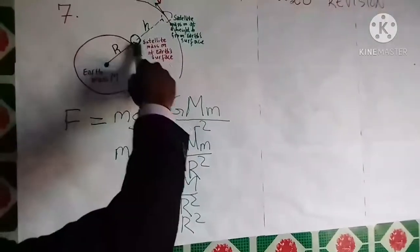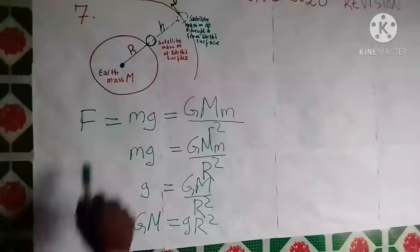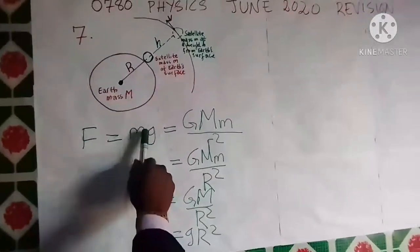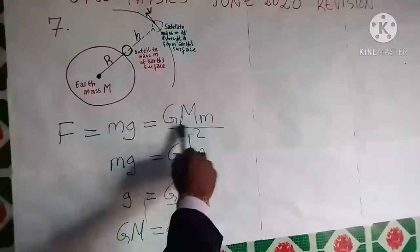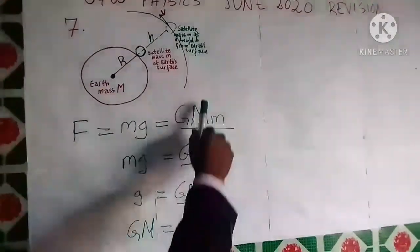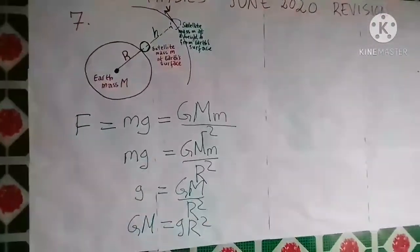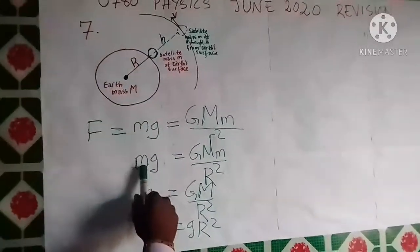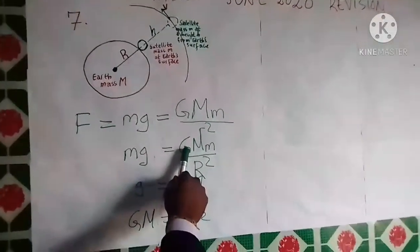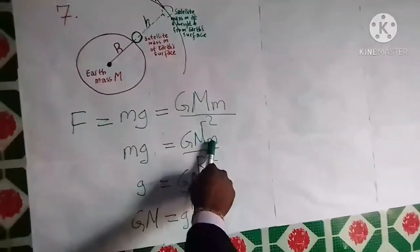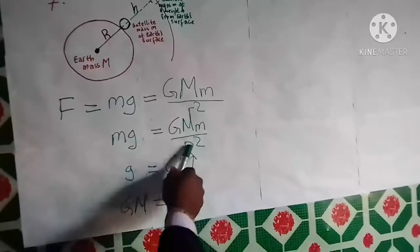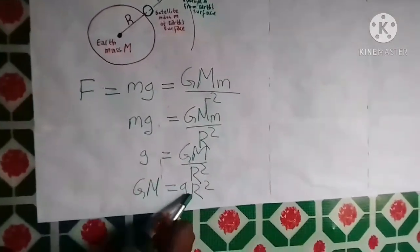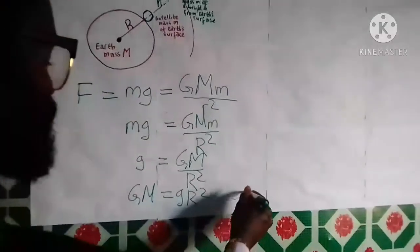Now, we know that if this body is at Earth's surface, the force — that is the weight acting on it — is given by mass times acceleration due to gravity. This is equal to the universal gravitational constant G times the mass of the Earth times the mass of the satellite, over the square of the separation. At Earth's surface, the separation is capital R. So we have Mg equal to G times capital M times small m divided by R squared, R being the radius of the Earth. This means that GM is equal to gR squared. Let's call this equation number one.